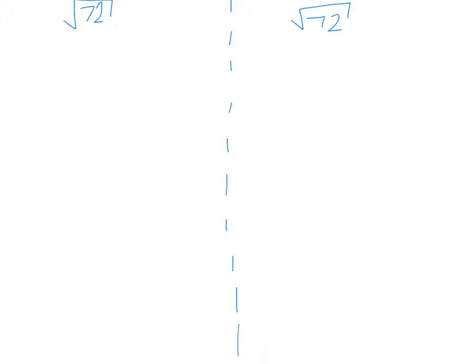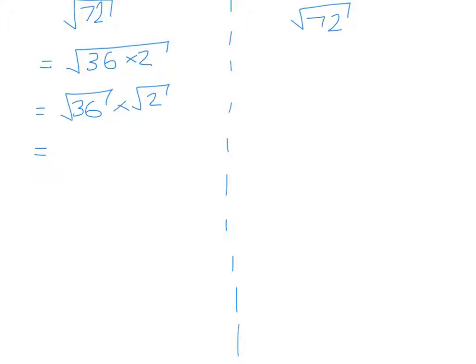For example three, simplify the square root of 72. Thinking about factor pairs of 72, I have 1 and 72, and 2 and 36. Since 36 is a square number (6 times 6), I write 72 as 36 times 2. Applying the property gives root 36 times root 2. The square root of 36 is 6, giving the answer 6 root 2. This is the quicker way because I chose the biggest perfect square that 72 can be divided by.